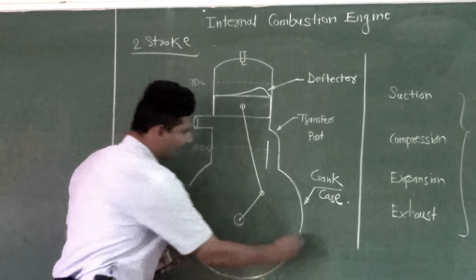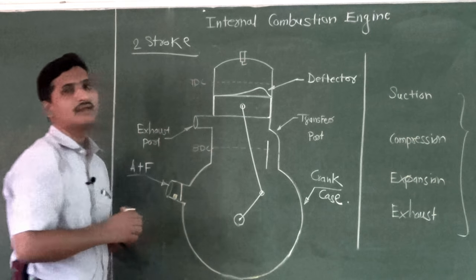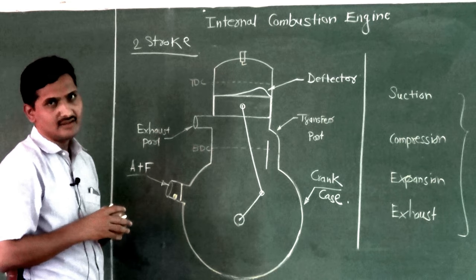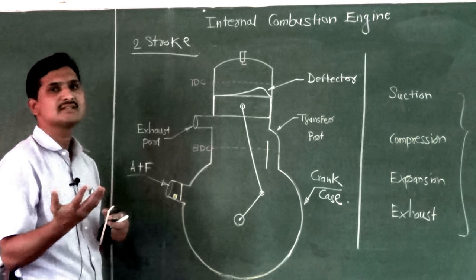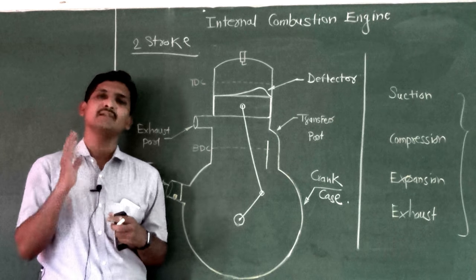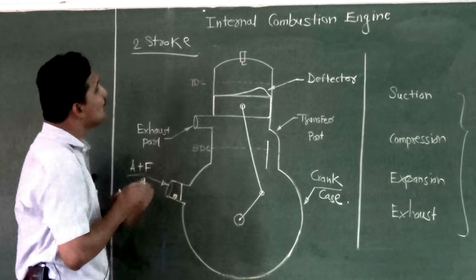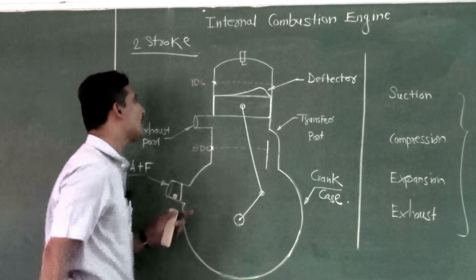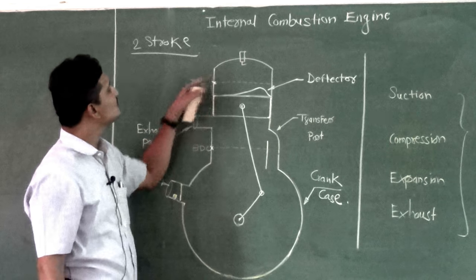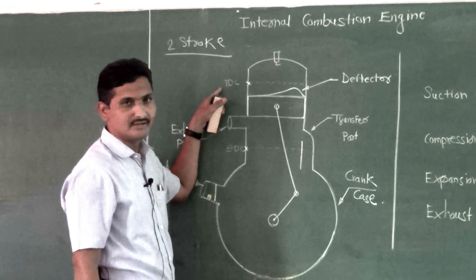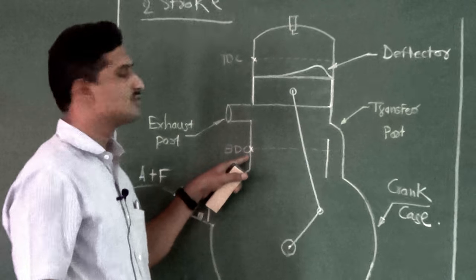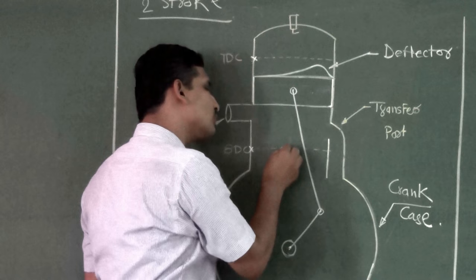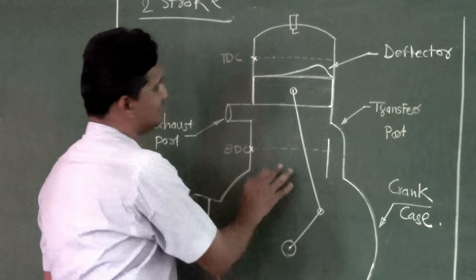Now, how does it work? This is called a two-stroke engine because for completing one cycle, two strokes of the piston are required. A stroke is the movement of the piston from one dead center to the other. The top dead center (TDC) is the extreme top position of the piston, and the bottom dead center (BDC) is the extreme bottom position. The piston cannot move above TDC or below BDC.